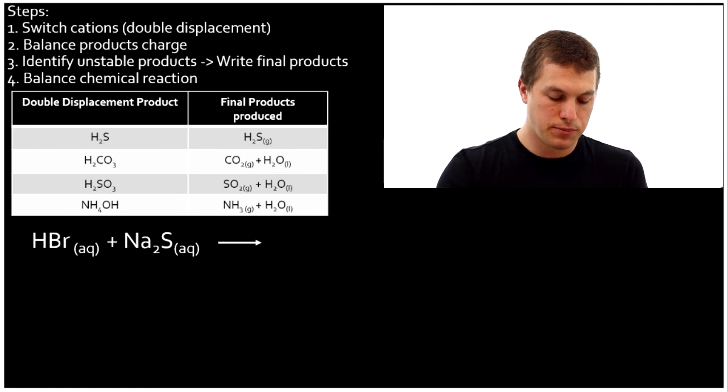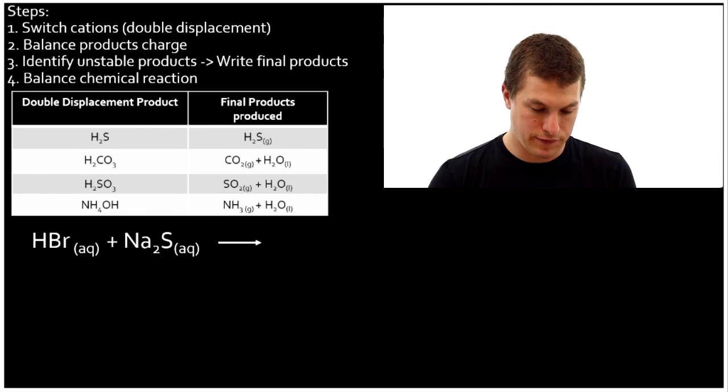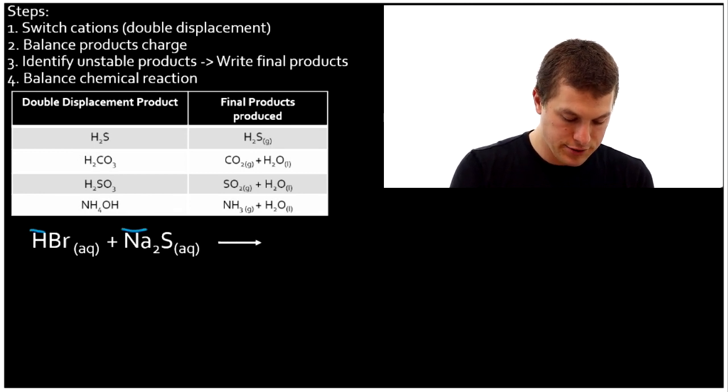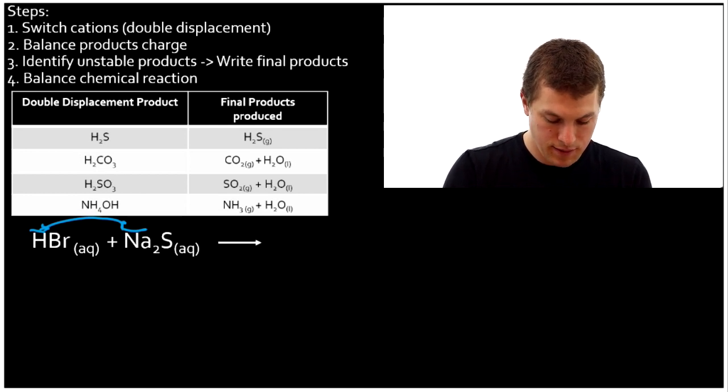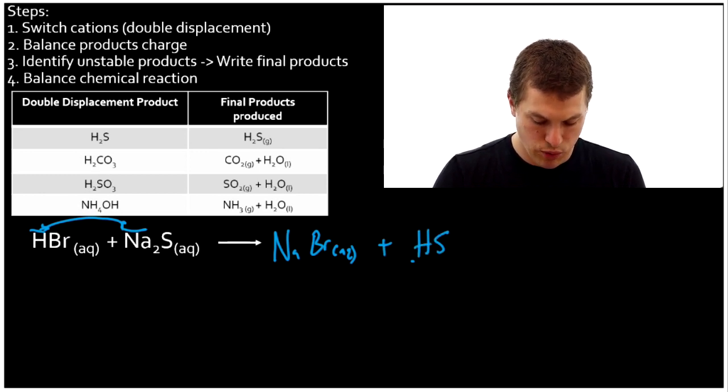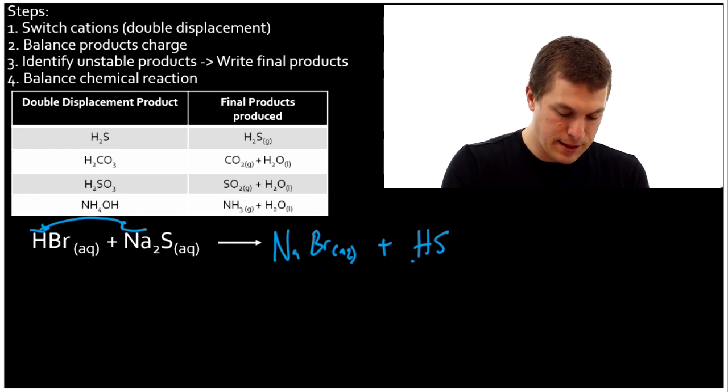Hydrogen bromide, or hydrobromic acid, combining with sodium sulfide. What happens there? Well, what we get is we switch the cations once again. Sodium and hydrogen. And we're gonna get out NaBr, and that is aqueous. Plus H2S. And we'll wait on assigning that phase for reasons that you might already see as obvious. So that's step one. We switch the cations.